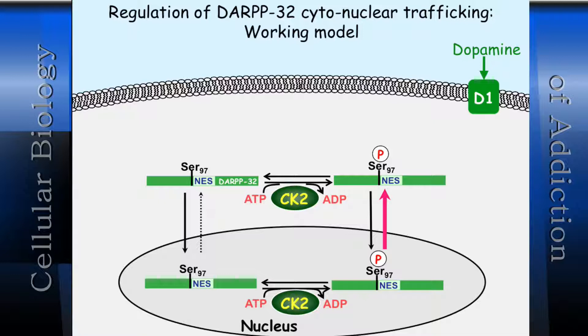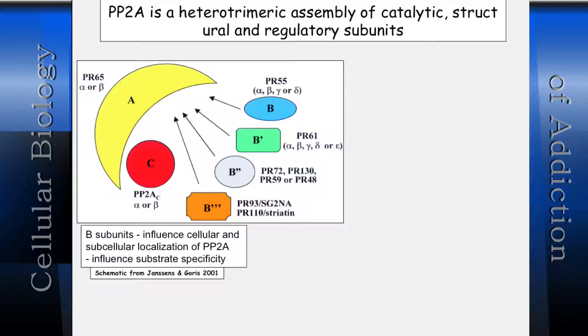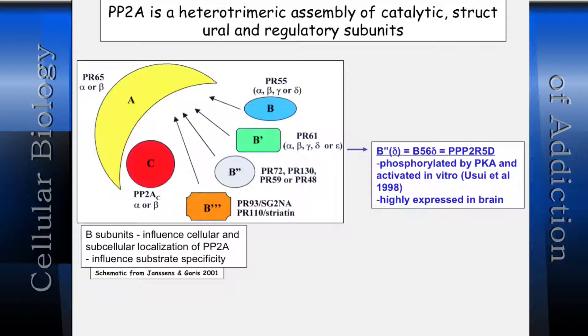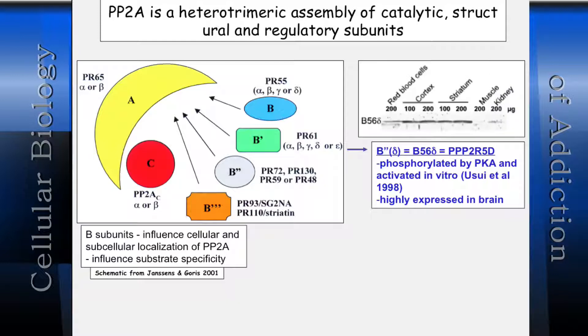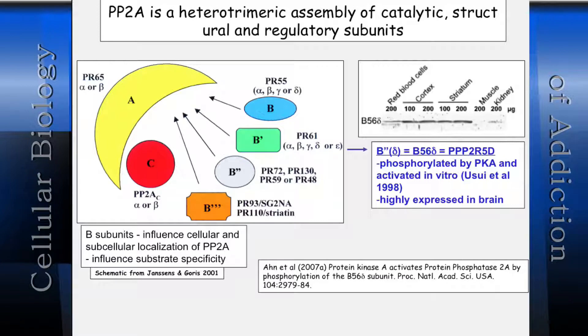Why might this be regulated? Maybe PKA somehow regulates this phosphorylation event. We had been working on PP2A — a heterotrimeric assembly of a catalytic subunit, a platform structural subunit, and various B subunits. One of these, B56-delta, turns out to be phosphorylated by PKA. We published a paper showing it is highly enriched in striatum in the brain. If we phosphorylate with PKA, we can specifically activate this form of PP2A that contains the B56-delta subunit.